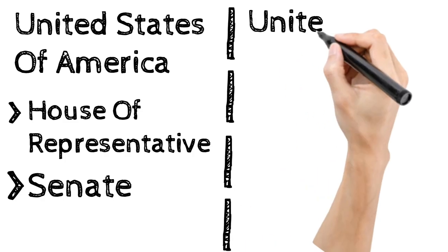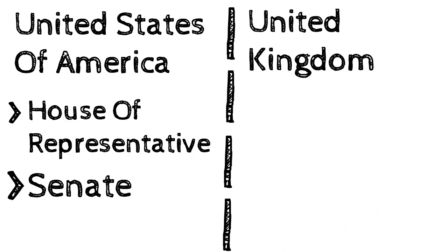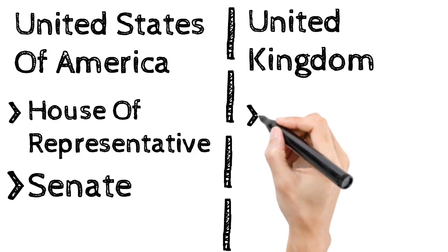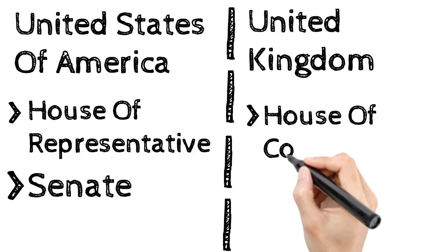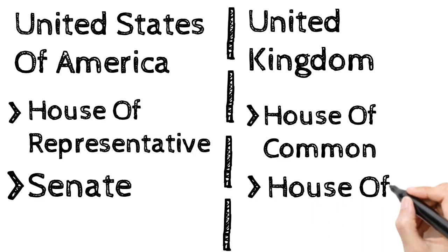If we turn to the UK, we find that the UK also has a two house system. There is the House of Commons which is the lower house, and the House of Lords. So these were some examples of bicameralism system.